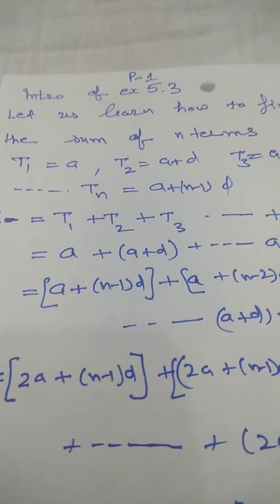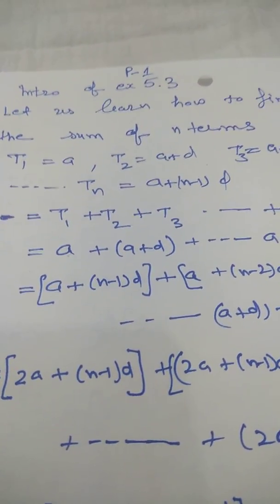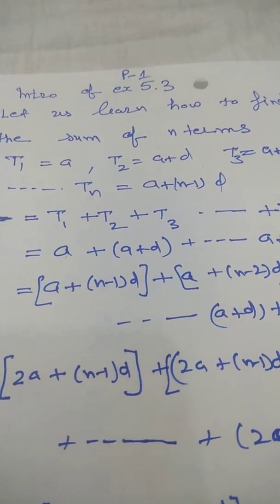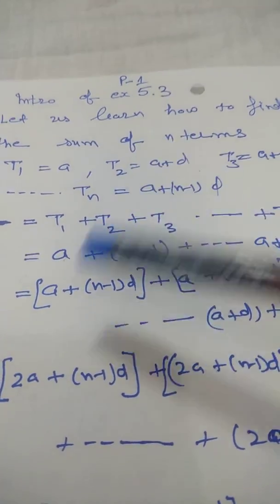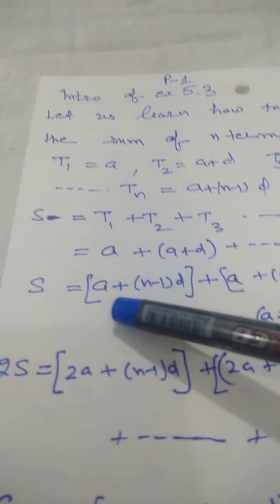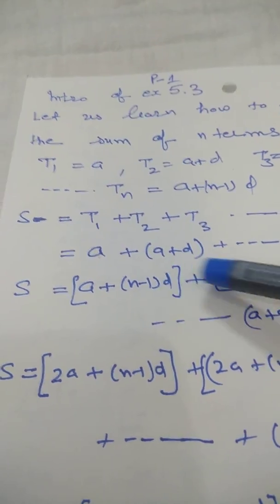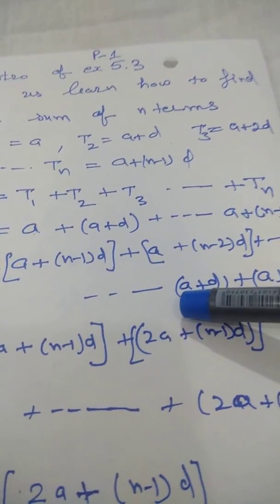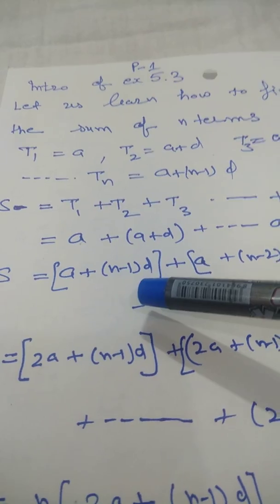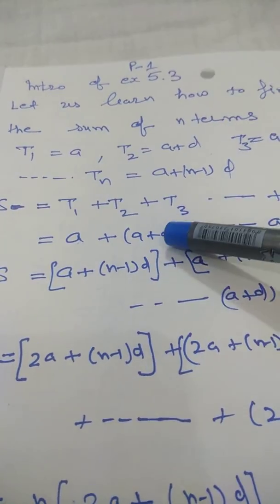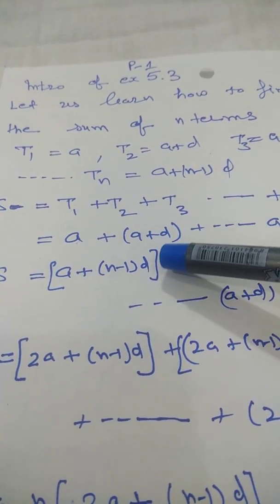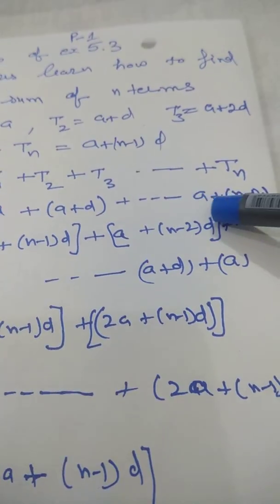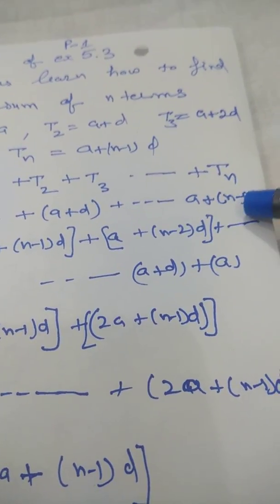The general term is tn = a + (n-1)d. Here we have to find the sum, which is denoted by S. So S equals t1 plus t2 plus t3 and so on up to tn. You know t1 means a, t2 means a + d, and so on.